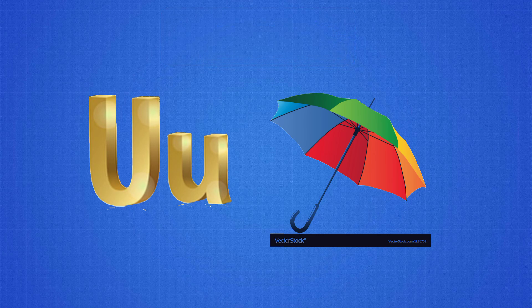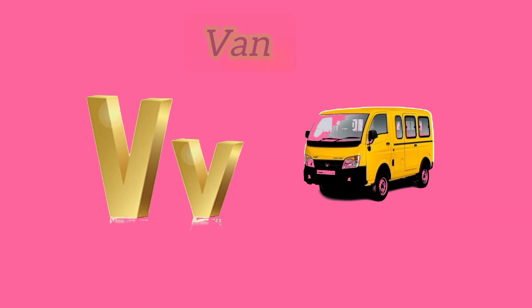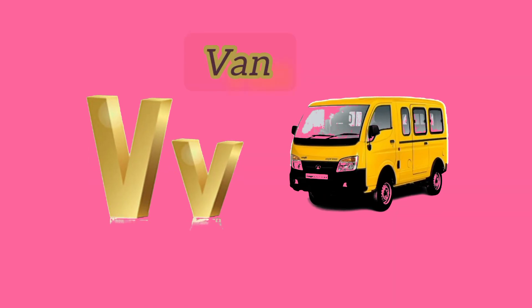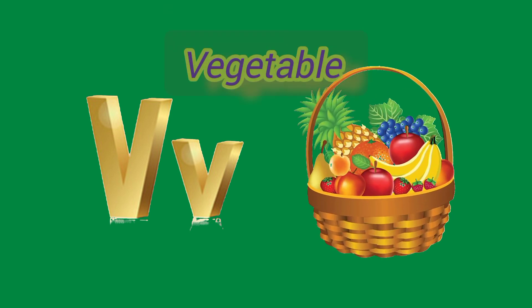U for uncle and U for umbrella. A. A. A. V for wine and V for vegetable. Wa. Wa. Wa.